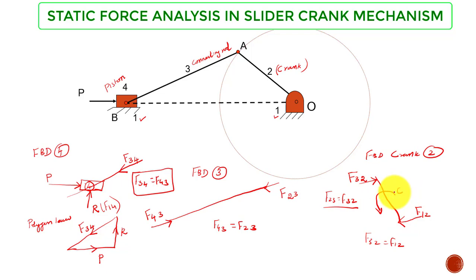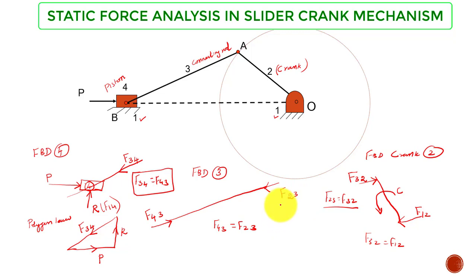In summary: the piston is subjected to three forces (P, R, and F34), the connecting rod is a two-force member (F43 and F23), and the crank is subjected to two forces and a couple. This static force analysis tells us all the forces acting on individual elements of the slider-crank mechanism, which is essential before proceeding to dynamic force analysis of the same mechanism.